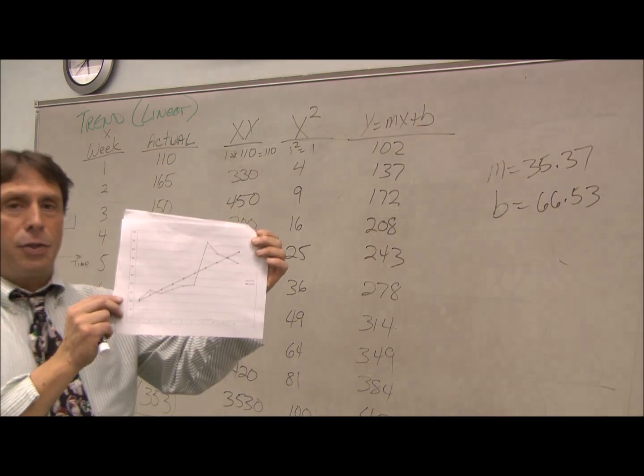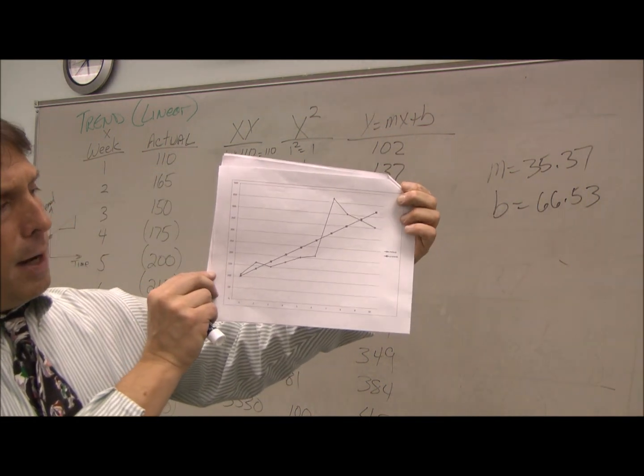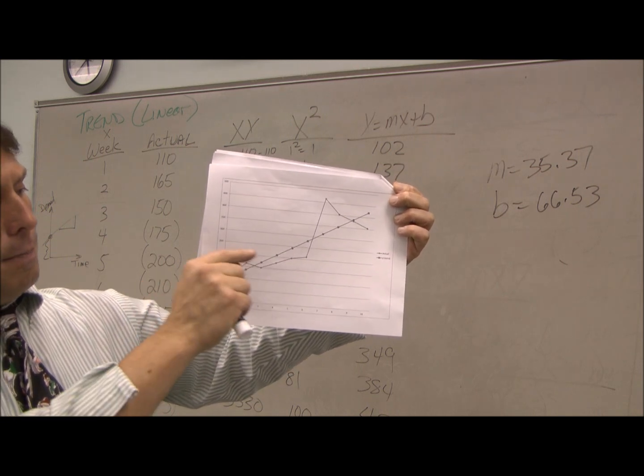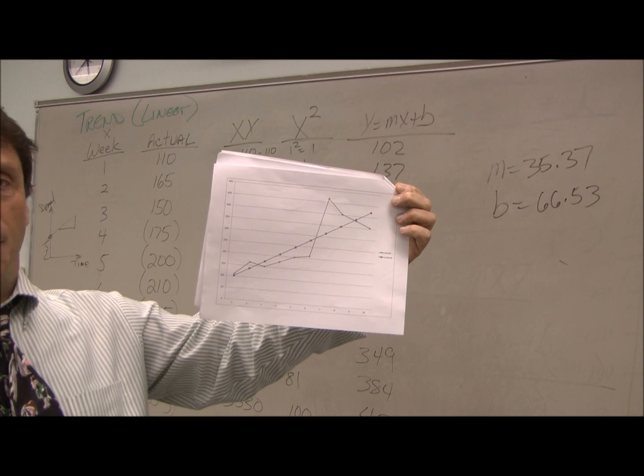I did out a fancy little chart here, hopefully that comes out okay. The straight line is the linear forecast. The up and downs is our actual data.